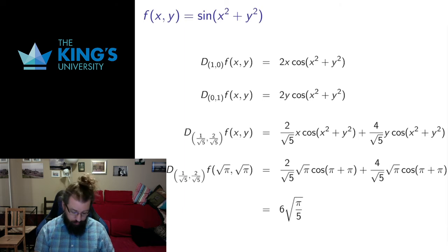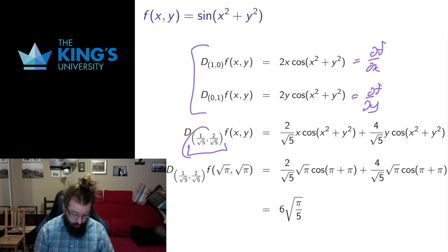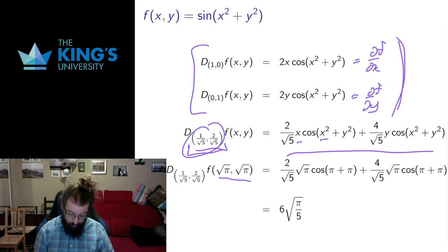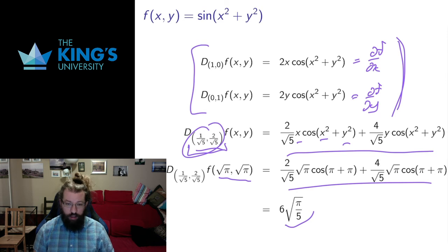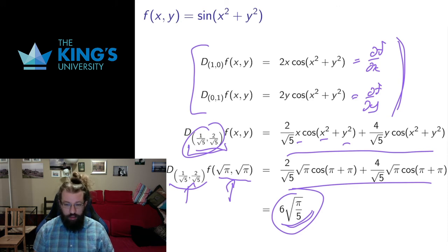The calculation requires the partial derivatives, which are the same as directional derivatives in the axis directions. So I calculate ∂f/∂x and ∂f/∂y. Then if I choose some other direction — unit vector (1/√2, 1/√5, 2/√5) — I take the dot product of this with the gradient. Evaluating at the point (√π, √π), I substitute in for x and y and simplify down to 6√π/5. This tells me that at the point (√π, √π), moving in the direction (1/√5, 2/√5) gives a fairly substantially positive rate of change — from this point, looking in this direction, I must be looking up a slope.